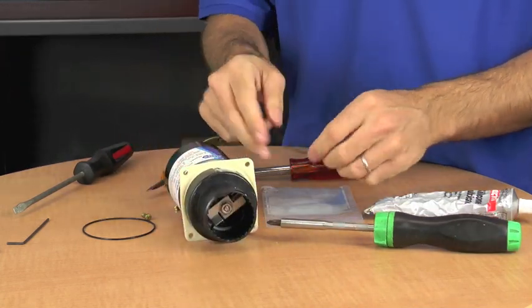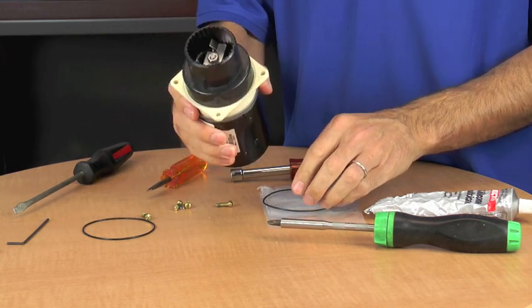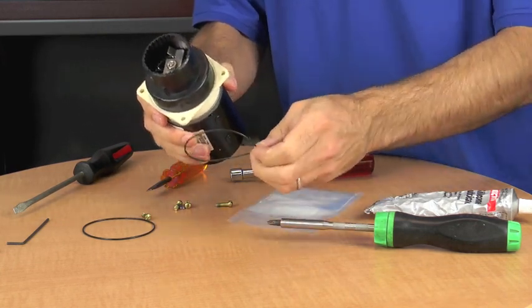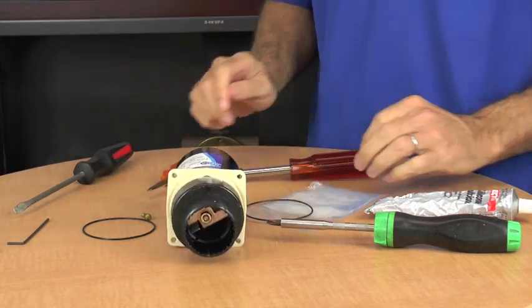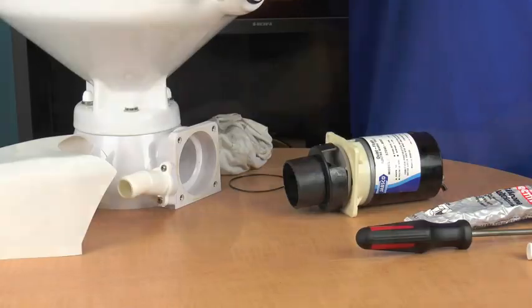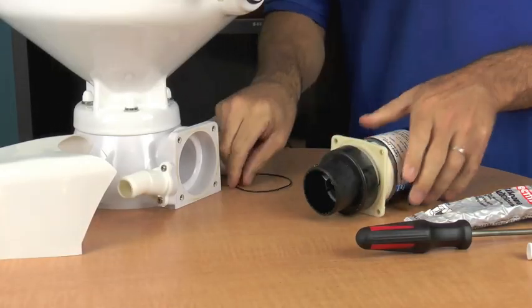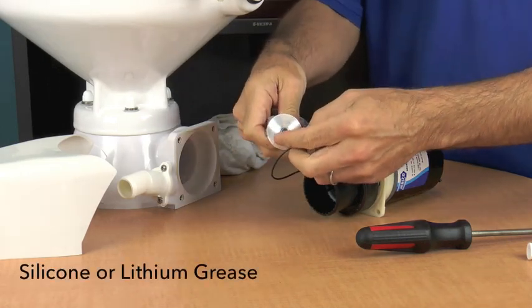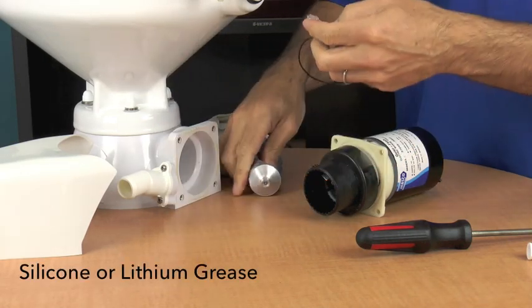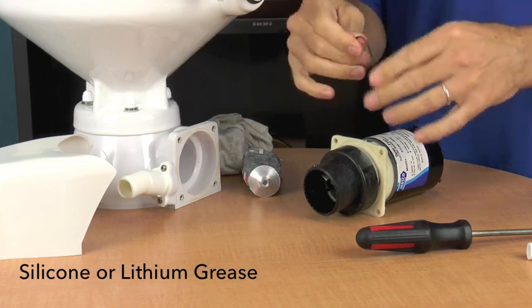the next step will be to put the motor assembly back onto the toilet, which in that process we'll put plenty of lubricant on the O-ring and we'll put it back onto the toilet. Okay, so now we're going to put the motor assembly back onto the toilet, good thing is to get some lube and put it on the O-ring,